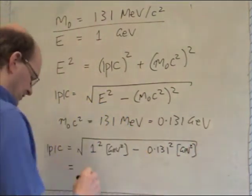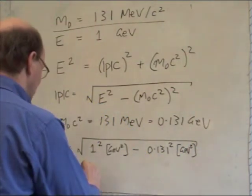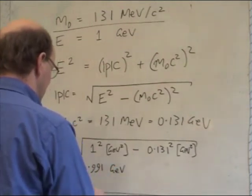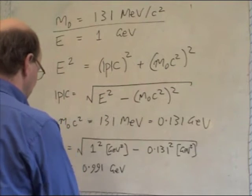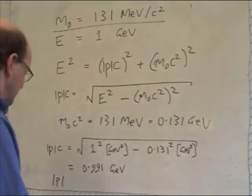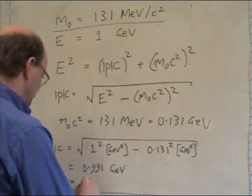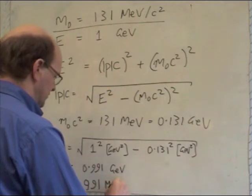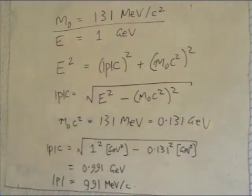And so the actual number comes out as 0.991 GeV, which means that the momentum P equals 991 MeV upon C, and that's what I want.